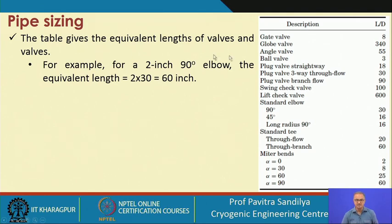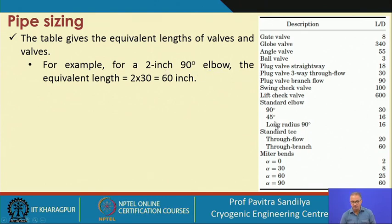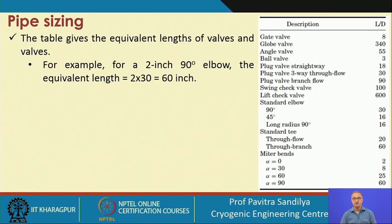A table gives equivalent lengths for valves: gate valve, globe valve, angle valve, and various other valves and fittings. Depending on the type of valve or fitting chosen, there is an equivalent straight pipe length. For example, a 2-inch 90-degree elbow has an equivalent L/D ratio of 30. Multiplying by 2 inches gives an equivalent length of 60 inches — meaning the pressure drop across a standard 90-degree elbow equals that of 60 inches of straight pipe of the same diameter.